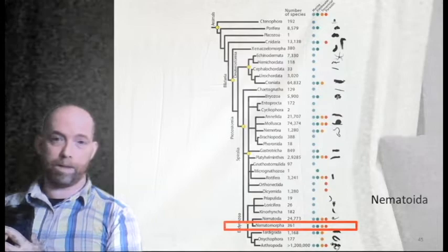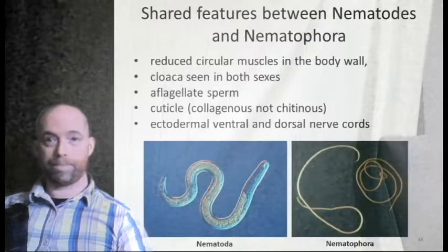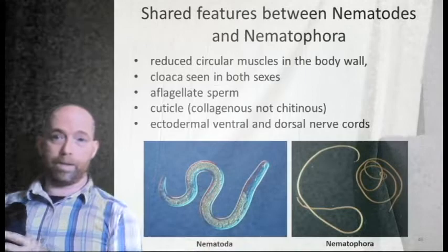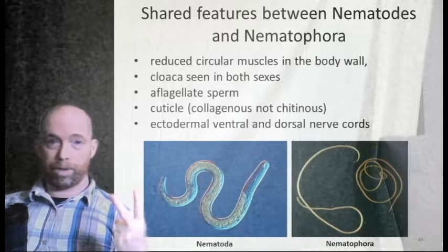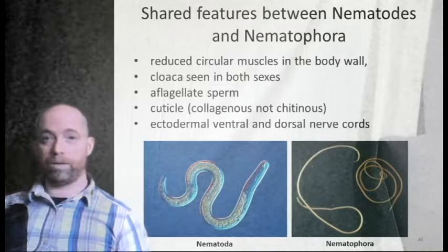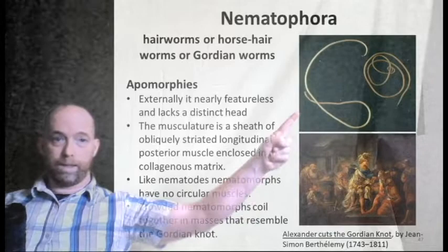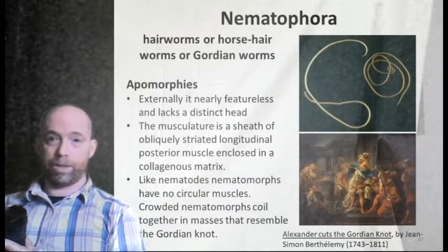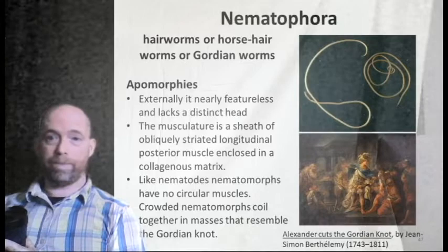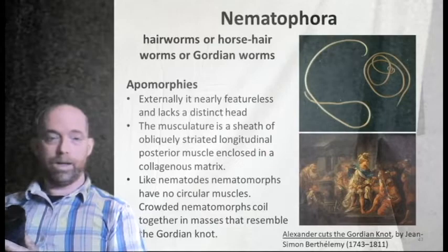The last of the three thread-like taxa are the nematomorphs, which together with nematodes form the monophyletic group Nematoida within the ecdysozoans. Shared features with nematodes include reduced circular muscle, abundant longitudinal muscle, a cloaca in both sexes, aflagellate amoeboid sperm, a collagenous (not chitinous) cuticle, and ectodermal ventral and dorsal nerve cords. Nematomorphs are often called gordian worms, hair worms, or horsehair worms — nearly featureless, lacking a distinct head.